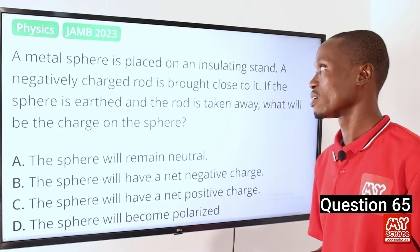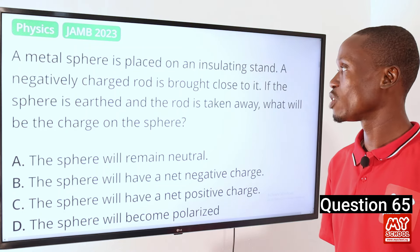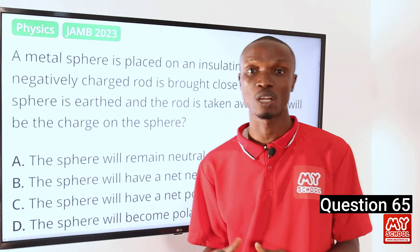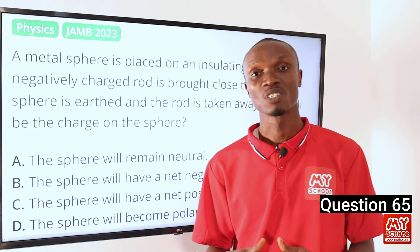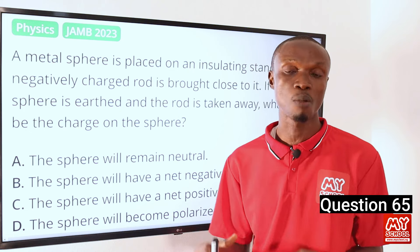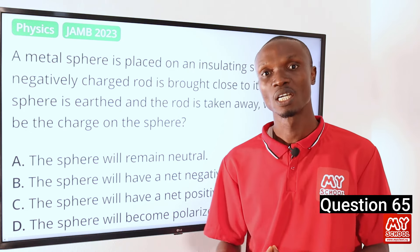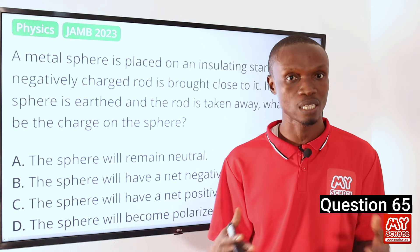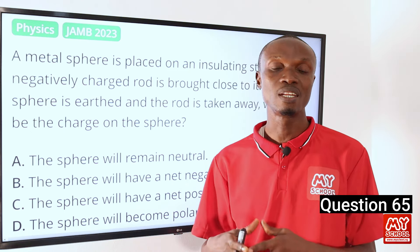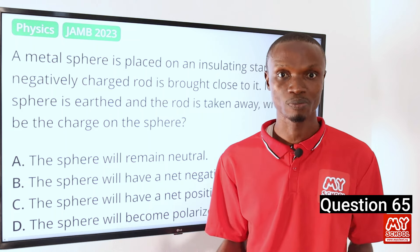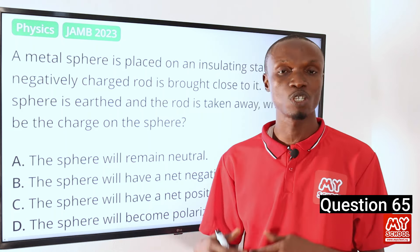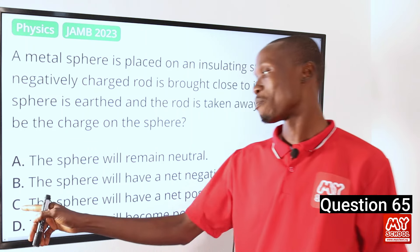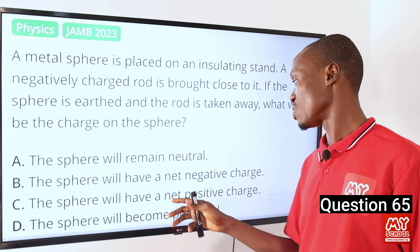Question 65. A metal sphere is placed on an insulating stand and a negatively charged rod is brought close to it. If the sphere is earthed and the rod is taken away, what will be the charge on the sphere? When a negatively charged rod approaches, free electrons on the metal sphere are repelled to the far end, creating a positive region near the rod. If the sphere is earthed and the rod is removed, electrons flow from the sphere to the ground, leaving a net positive charge on the sphere. So option C is correct.